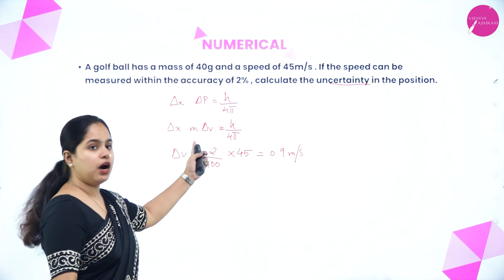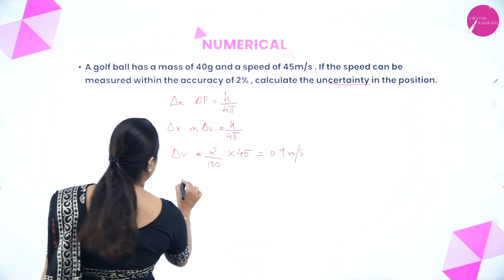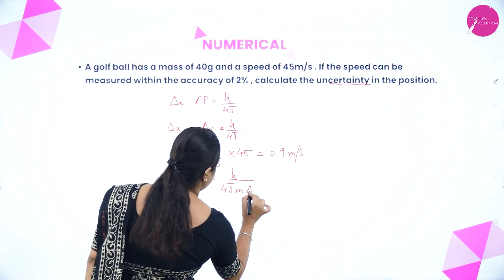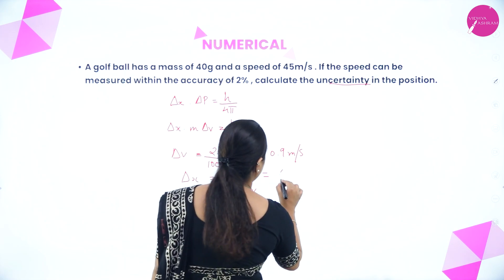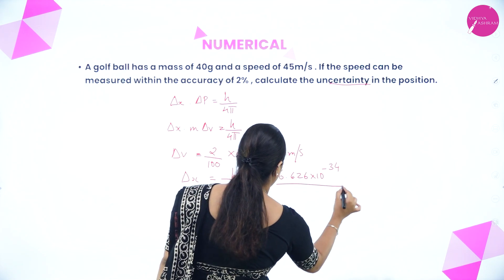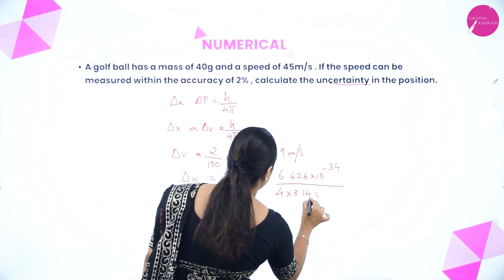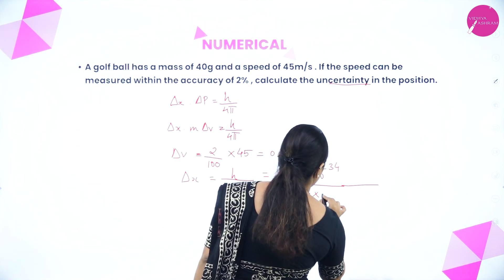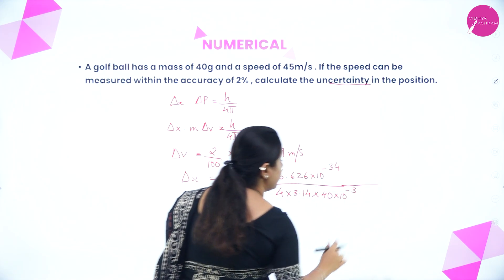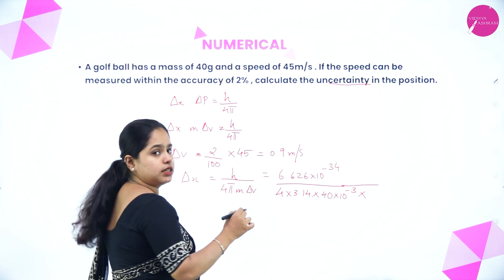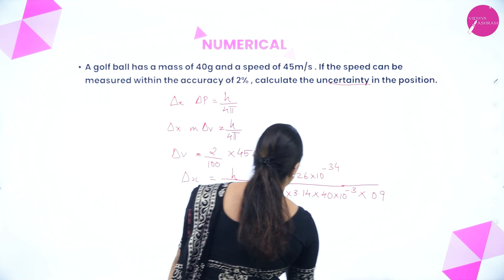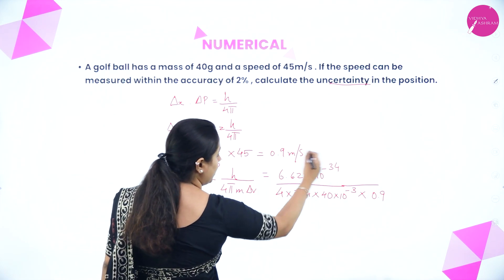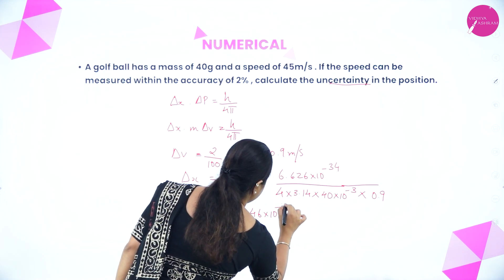Now we know delta v = 0.9 m/s and mass = 40 g = 40 × 10⁻³ kg. Rearranging: delta x = h/(4pi × m × delta v) = 6.626 × 10⁻³⁴ / (4 × 3.14 × 40 × 10⁻³ × 0.9), giving delta x = 1.46 × 10⁻³³ meter.